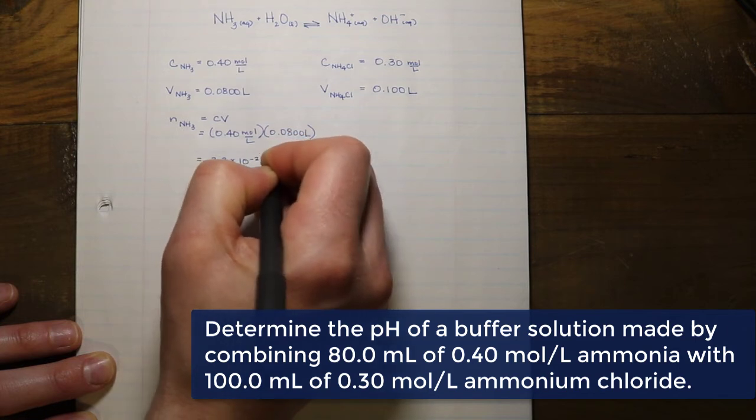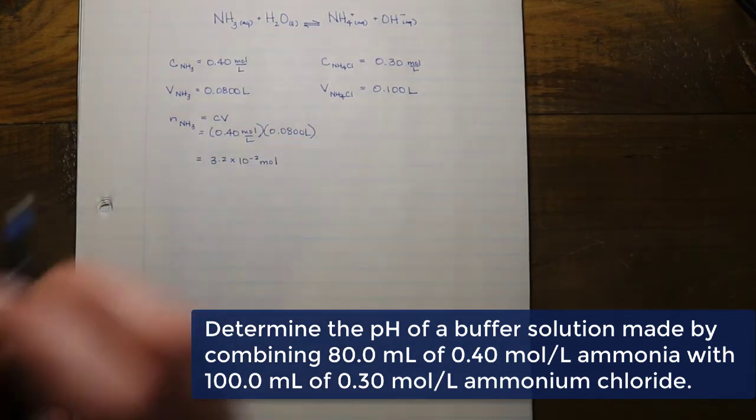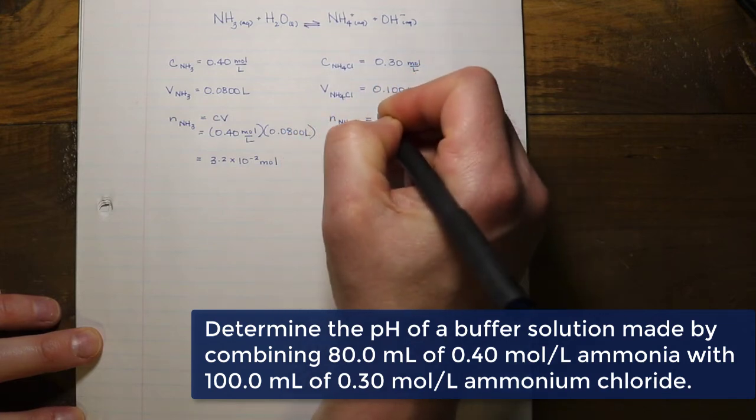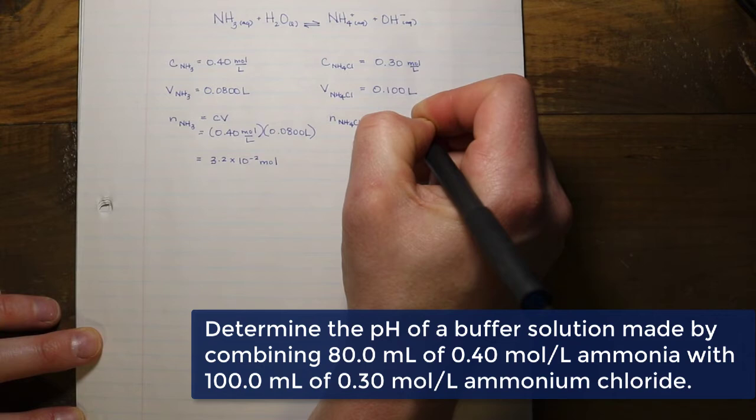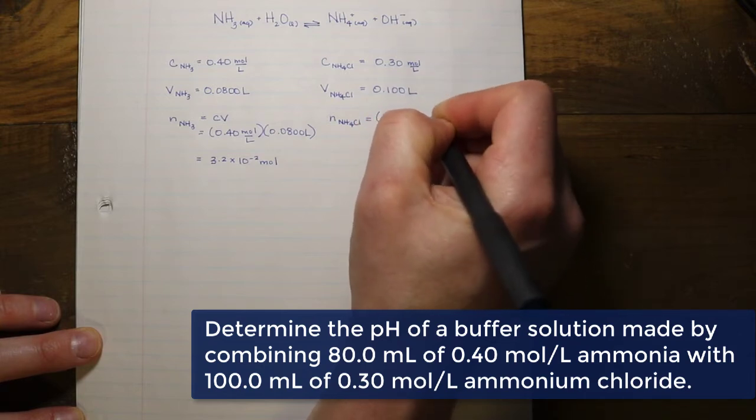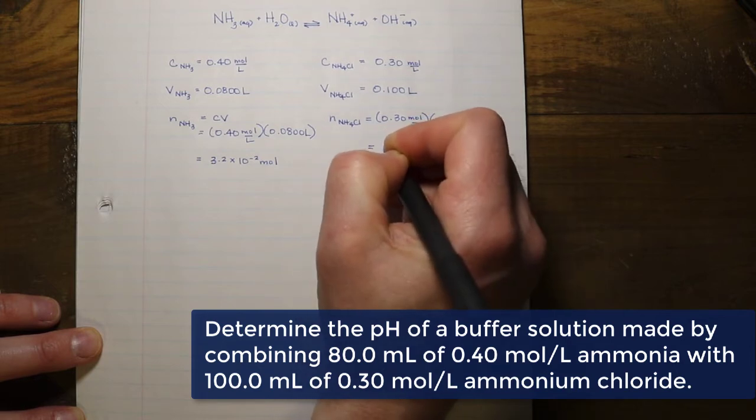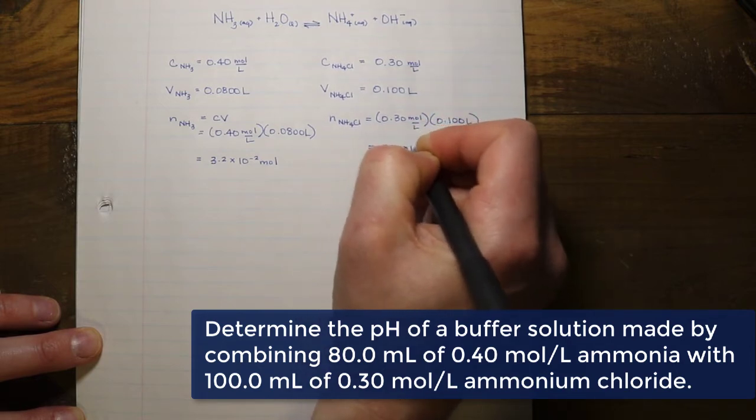I can do the same for the ammonium chloride. In doing so I multiply the concentration of 0.30 moles per liter times 0.100 liters, again converted from milliliters, and I get a value of 3.0 times 10 to the negative 2 moles.